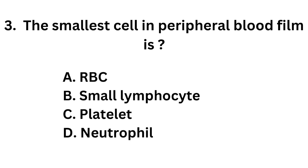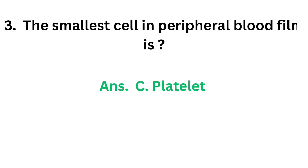Question number 3. The smallest cell in peripheral blood film is? Option A: RBC. Option B: Small lymphocyte. Option C: Platelet. Option D: Neutrophil. The correct answer is option C, Platelet. Platelet is the smallest cell in peripheral blood film.